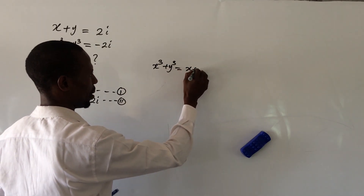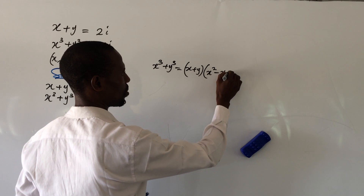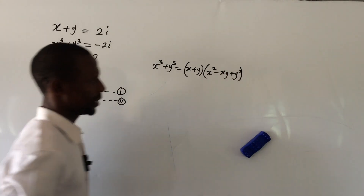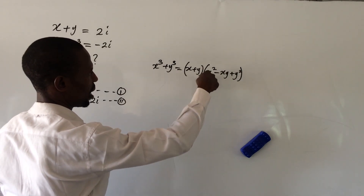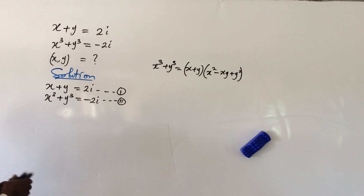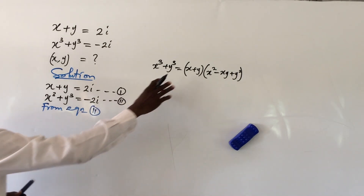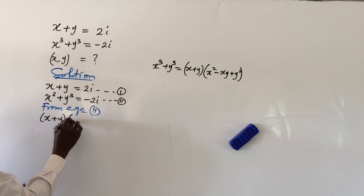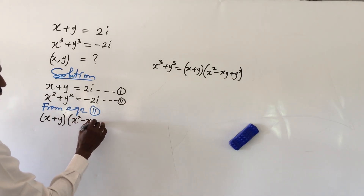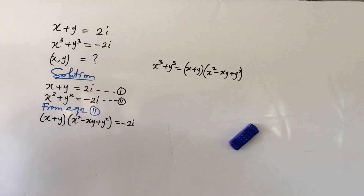This identity means x³ plus y³ equals (x plus y)(x² minus xy plus y²). So from equation 2 we can replace x³ plus y³ with this factored form, giving us (x plus y)(x² minus xy plus y²) equal to minus 2i, which is the right side of equation 2.